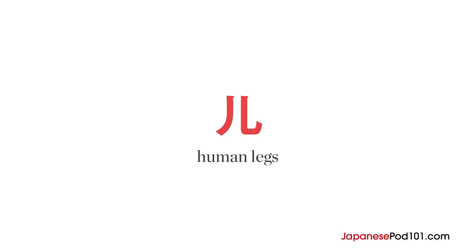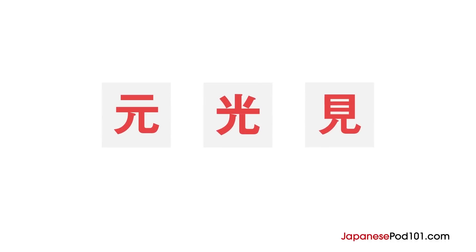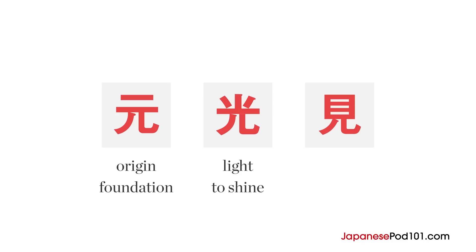Unlike the previous radicals that we've learned, the meaning of the human legs radical is less literal. It generally alludes more to the sense of structural support that our legs provide us with. From left to right, the first kanji means origin or foundation, the second means light or to shine, and the third character means to see.